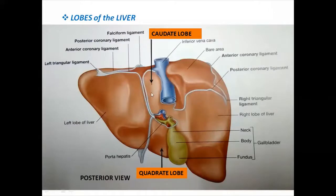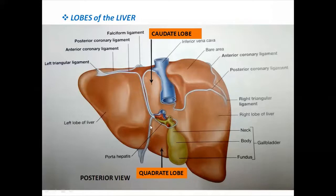The caudate and quadrate lobes lie respectively on the posterior and inferior surfaces of the liver. The caudate lobe is bounded on the left by the fissure for the ligamentum venosum and on the right by the left margin of the groove for the inferior vena cava, extending up to the porta hepatis. The quadrate lobe is bounded on the left by the fissure for ligamentum teres hepatis and on the right by the left margin of the fossa of the gallbladder.